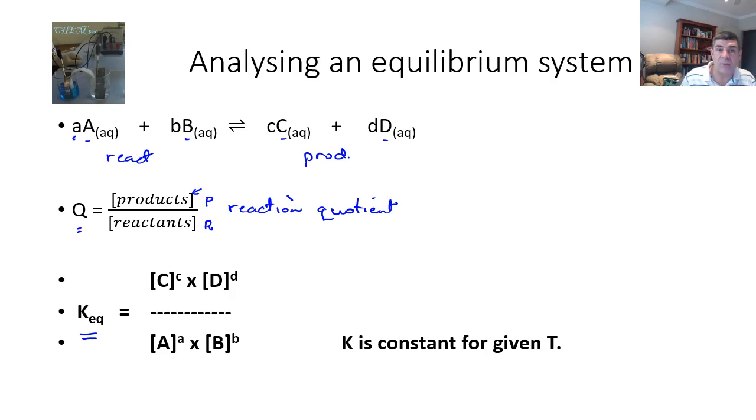Now as a reaction proceeds if we start with reactants and no products then the reaction will proceed and this value of the reaction quotient will change and it will continue to change as reactants form products. This will continue to occur until the number of products starts to reach a point where they are starting to reform the reactants and at some point the system will stabilize.